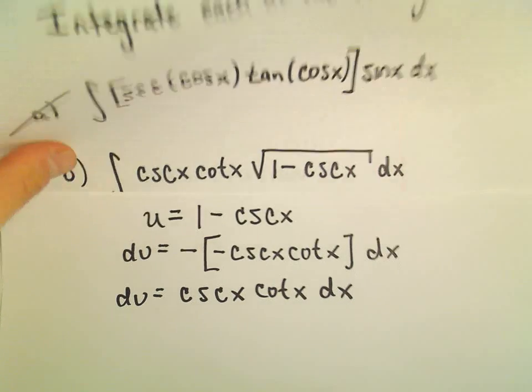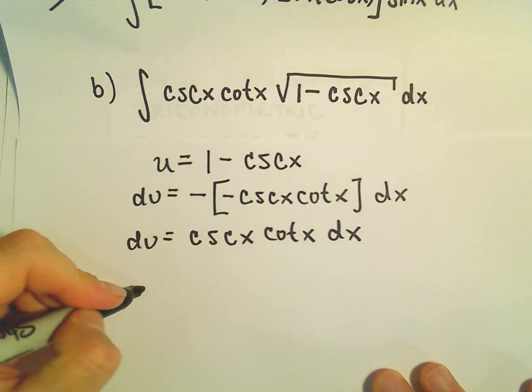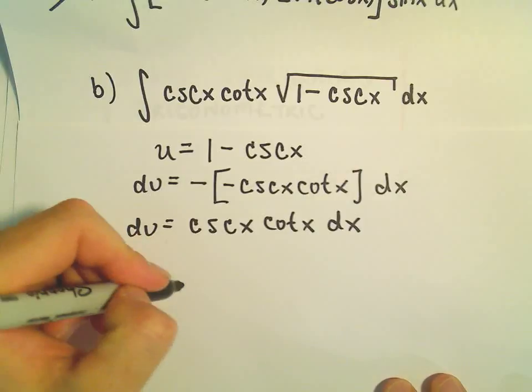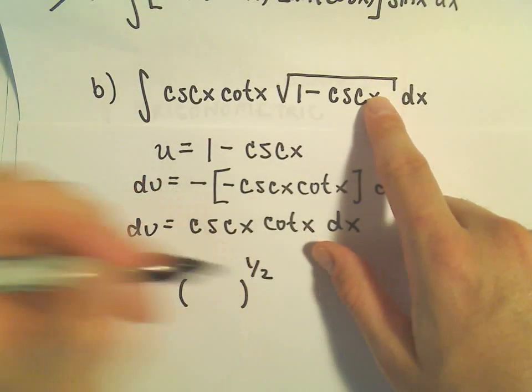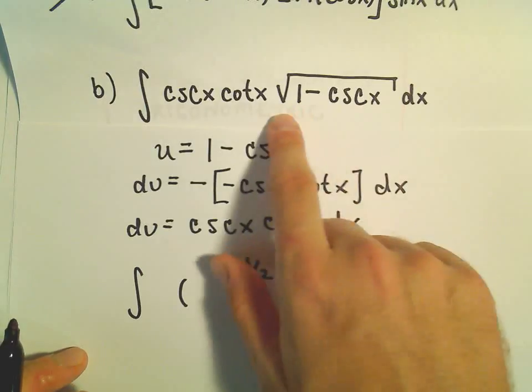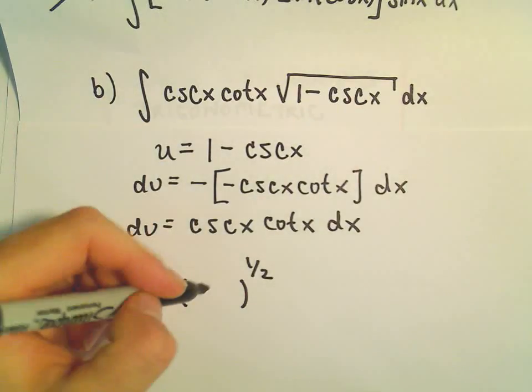So now we can rewrite everything again. Let's see, I'm going to rewrite our square root as to the 1 half power. And the 1 minus cosecant x, that's what we're calling u.